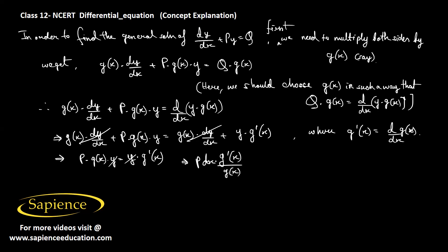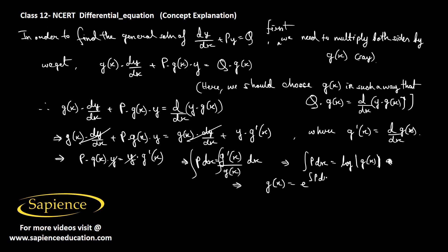Integrating both sides, ∫P dx = ∫g'(x)/g(x) dx. Substituting t = g(x), so g'(x)dx = dt, the right side becomes ∫dt/t = log|g(x)|. Therefore g(x) = e^(∫P dx). This g(x) is called the integrating factor, or IF for short.